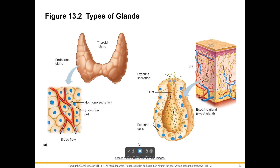This diagram compares the thyroid gland to a sweat gland, an exocrine type — a sudoriferous gland. On the exocrine side, cells are releasing sweat, which travels to a duct and leaves the body through the skin. The endocrine gland — the thyroid gland — is releasing hormones that eventually go into capillaries and travel through the blood to the whole body.